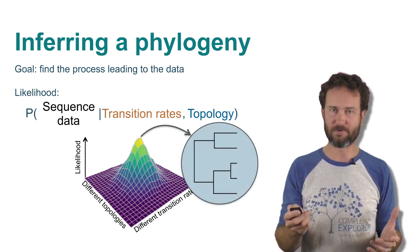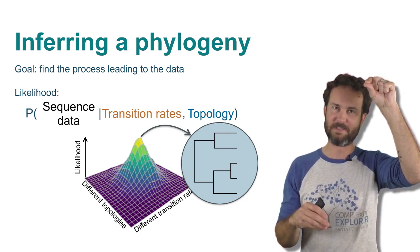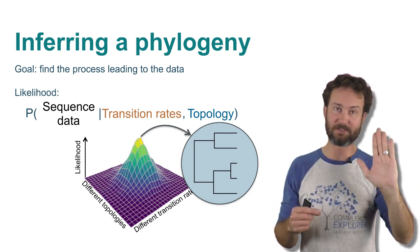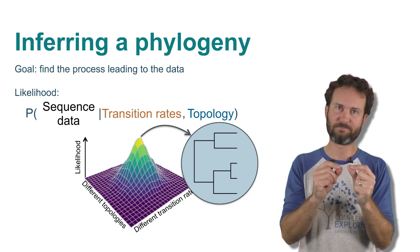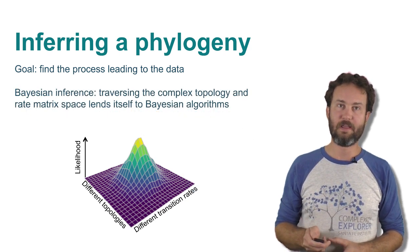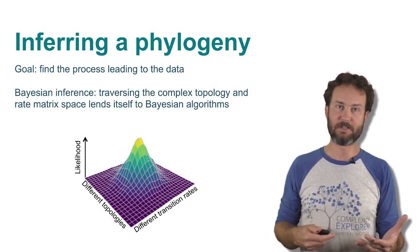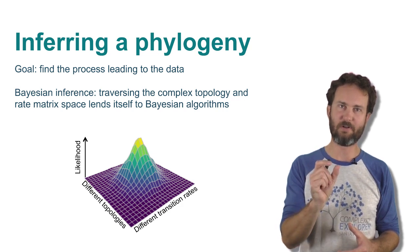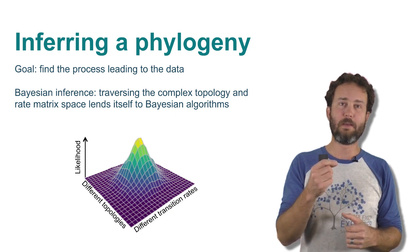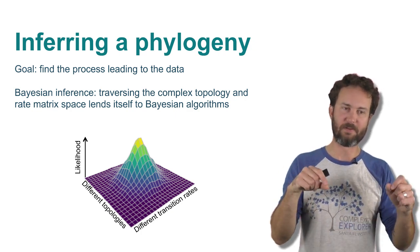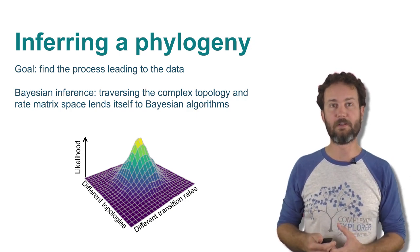I've created a very simplified version of this, with different topologies on one axis and different transition rates on the other axis, with likelihood coming up the z-axis. In reality, topologies are not a simple one-dimensional axis — they're a complicated web of different choices. So traversing this space can be very challenging. For that reason, one alternative to maximum likelihood inference is Bayesian inference, which still uses the likelihood as a critical part of inferring the most probable phylogeny and transition rate matrix, but has a different algorithm for moving through this space that's more conducive to its complexity.